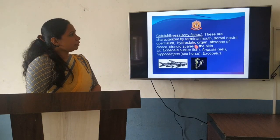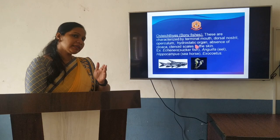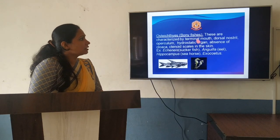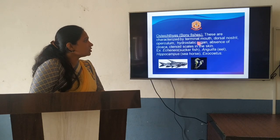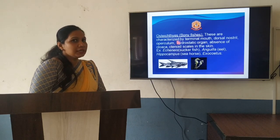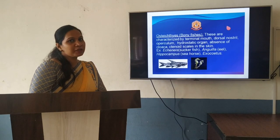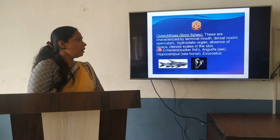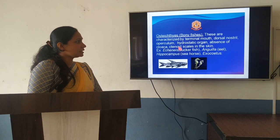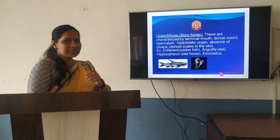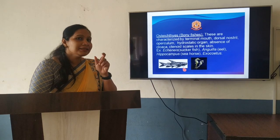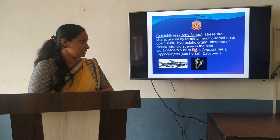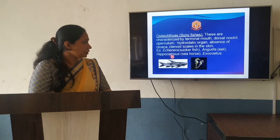Osteichthyes are known to be the bony fishes. Here we have marine, freshwater, as well as aquarium fishes. They are characterized by a terminal mouth, dorsal nostril, as well as operculum. They have four or less than four pairs of gills, which are mainly covered by the operculum. Cloaca is absent. They have ctenoid or cycloid scales, which are very prominent and visible.